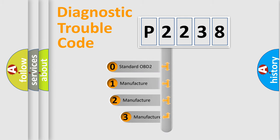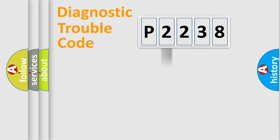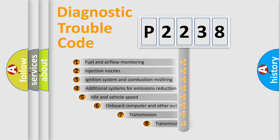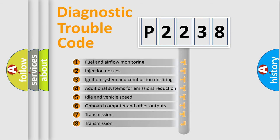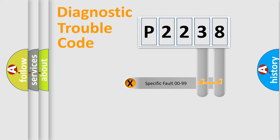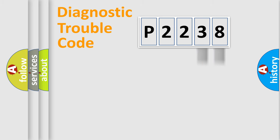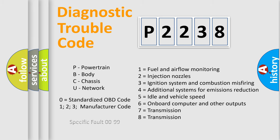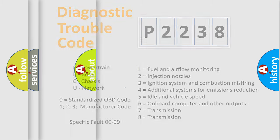If the second character is expressed as zero, it is a standardized error. In the case of numbers 1, 2, or 3, it is a more specific expression of a car-specific error. The third character specifies a subset of errors. This distribution is valid only for the standardized DTC code. Only the last two characters define the specific fault of the group. Such a division is valid only if the second character code is expressed by the number zero.